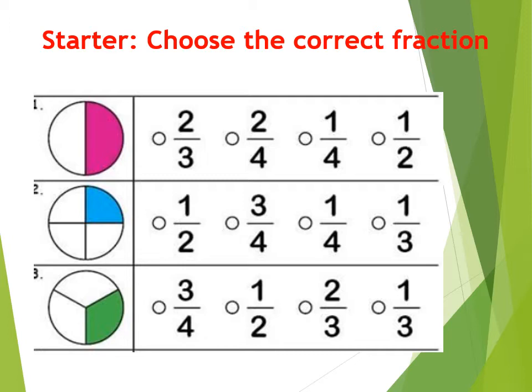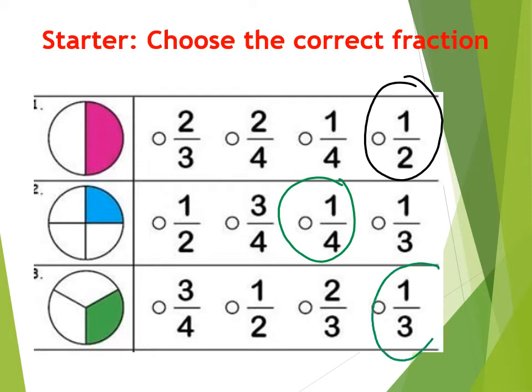Here is our starter. Choose the correct fraction. You can see different shapes and you need to find the correct fraction for the shaded part. For number one, the answer is half because the half is shaded. For question number two, the fraction is one out of four, and question number three is one out of three.